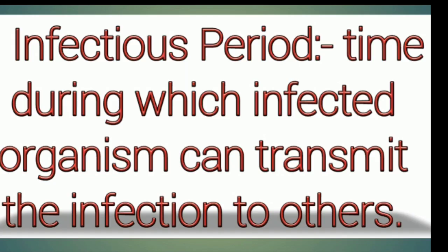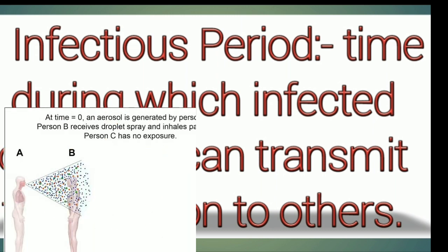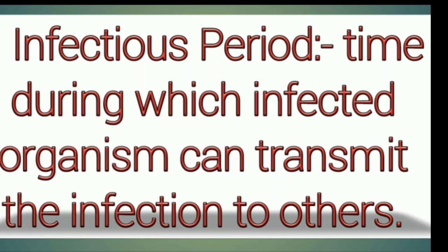Next is the infectious period — the time during which an infected organism can transmit the infection to others. This is also known as the period of communicability.